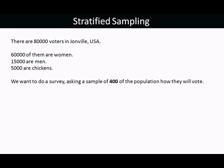We want to do a survey about how people are going to vote. We don't want to ask all 80,000 people, so we're going to do a sample of 400 people. The population is everybody — 80,000 people — and the sample is 400.